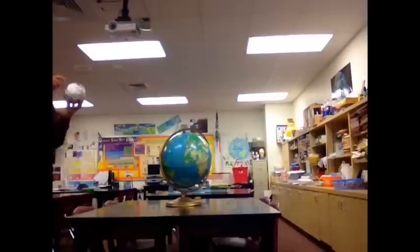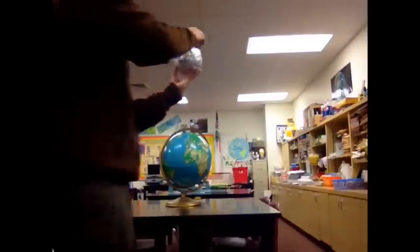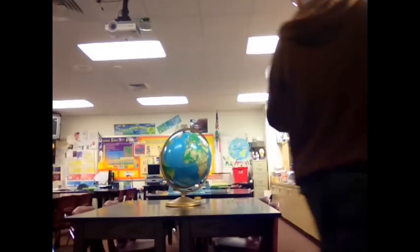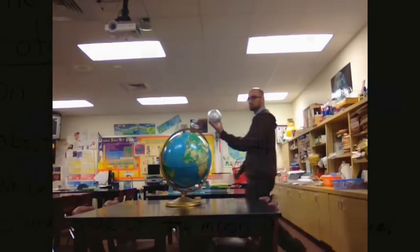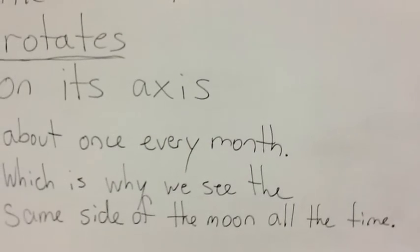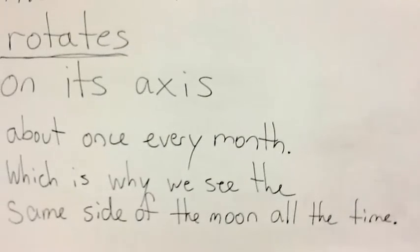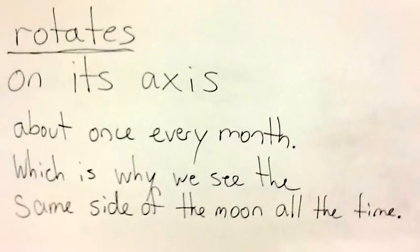The Moon rotates on its axis about once every month, and that is the reason why we only see one side of the Moon.